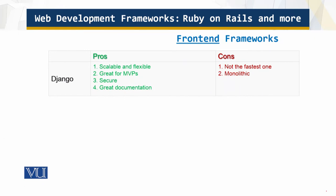Let's first talk about Django. One of its cons is that it is monolithic — meaning it is a bulky, one-tier type application — and because of that it is not the fastest. On the pros side, it has great documentation and strong security, making it a great choice for e-commerce websites and other contexts where security is a priority.